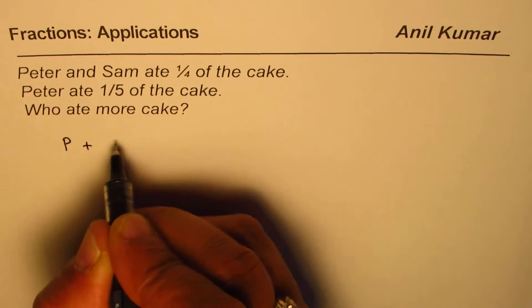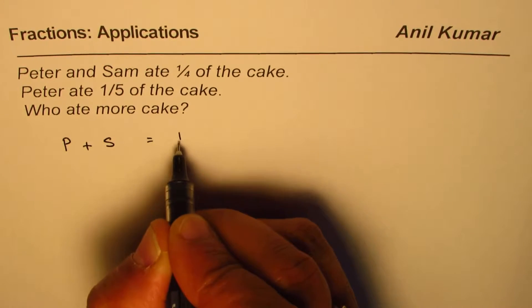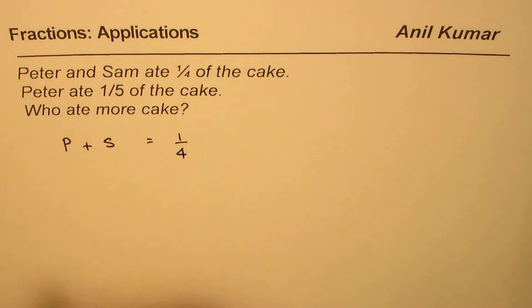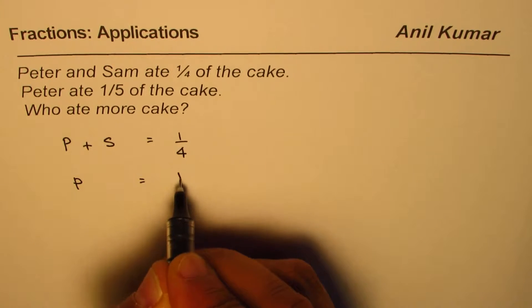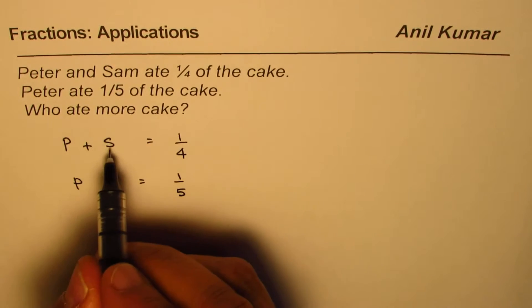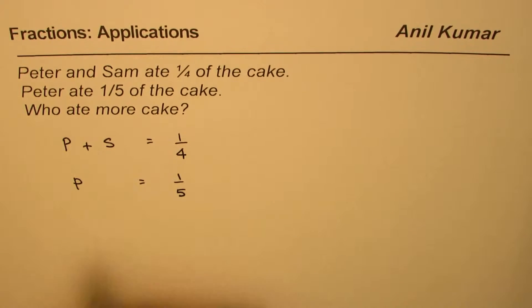So, Peter and Sam ate one-fourth of a cake, right? Of whole. So, one-fourth. And Peter ate one-fifth. So, how much did Sam eat? That is what you have to find.